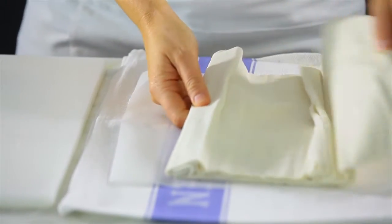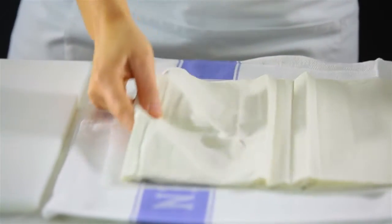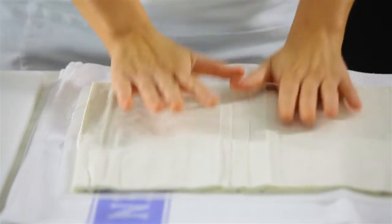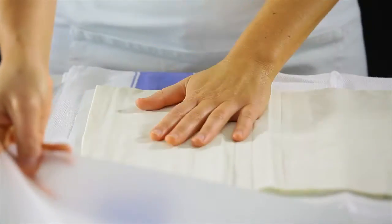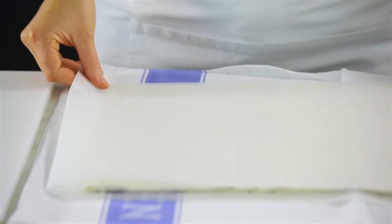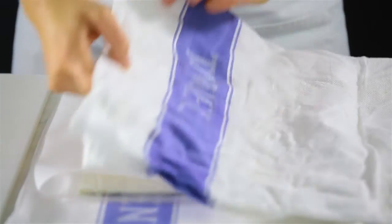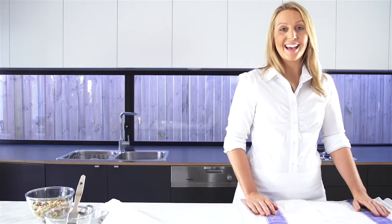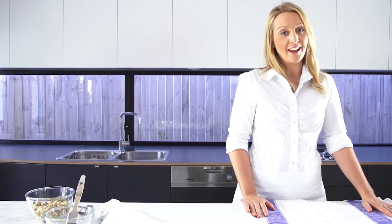Phyllo pastry tends to dry out very quickly and very easily, so you want to make sure that it stays nice and moist the entire time you're working with it. So once you've laid it out, place another sheet of baking paper on top and cover that with a damp tea towel. That will ensure that while you're working with the pastry it doesn't dry out.